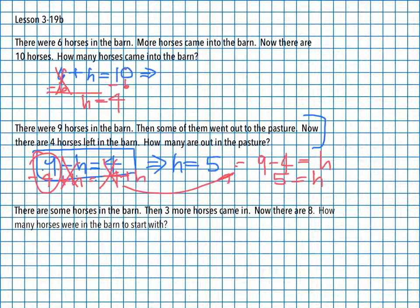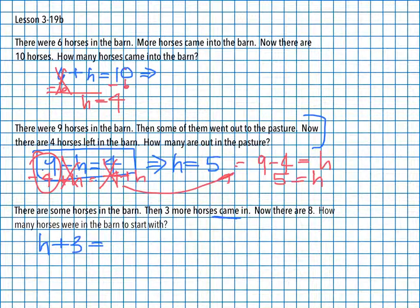There are some horses in the barn, then three more horses came in, and now there are eight. How many horses were in the barn to start with? We are going to write a situation equation. We start with the number of horses in the barn — we don't know how many, so that's our variable. Then we add three because three more came in, and now there are eight. So that's our situation equation: h plus three equals eight.